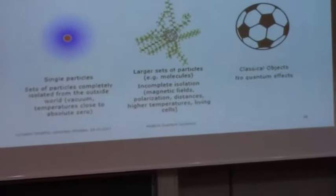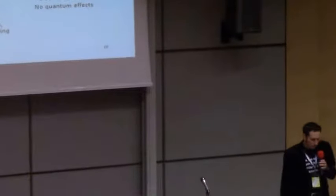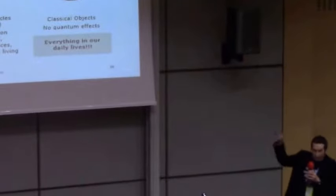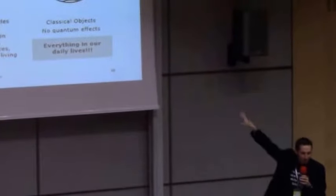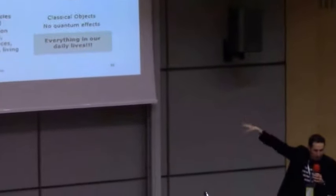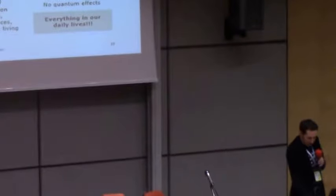Jim Al-Khalili and Johnjoe McFadden talked about at the last European Skeptics Conference. So, this is all relatively well understood now, and not quite as mysterious as it always seemed. But the one thing to keep in mind is that everything that happens in our daily lives happens on the very right of this picture. Everything that happens in our daily lives is basically classical physics.